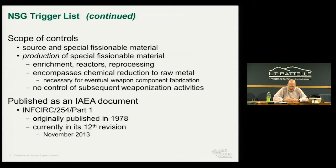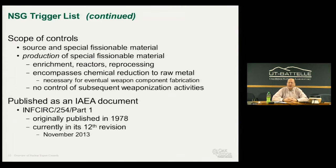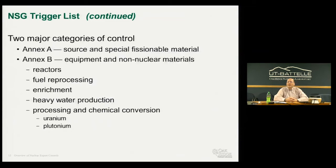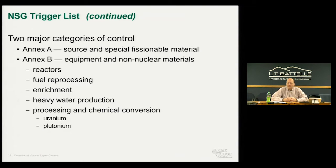The IEA publishes the NSG Trigger List as a service—it's called Part 1. First published in 1978, not long after the Indian test shot, it is now in its 12th revision with a 13th just coming out. It has two major categories: Annex A covers source materials and special fissionable materials themselves; Annex B covers everything else—equipment and non-nuclear materials such as reactors, fuel reprocessing, enrichment, and heavy water production.